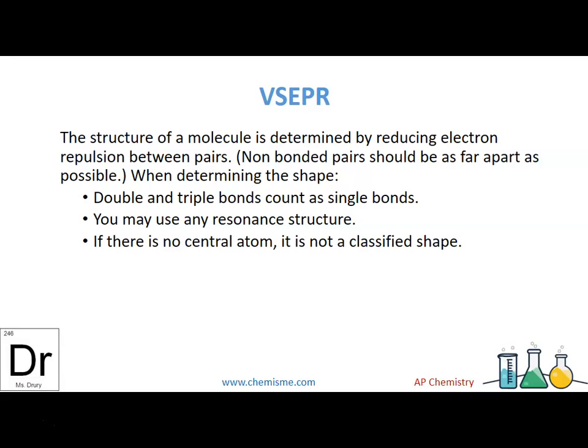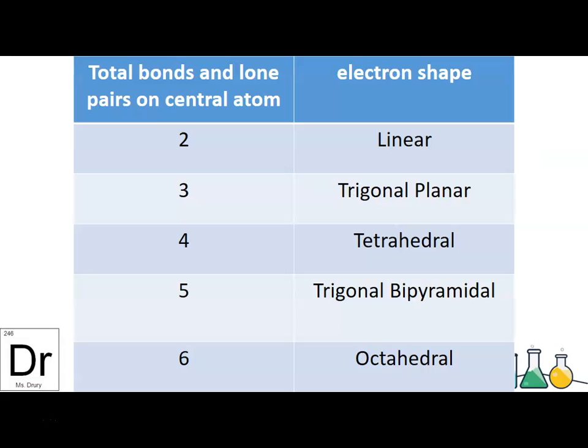When you determine the shape, double and triple bonds count as single bonds. You can use any resonant structure, that shouldn't make any change. If there's no central atom, it is not a classified shape. So those organic things we saw last year, not shaping those right now.